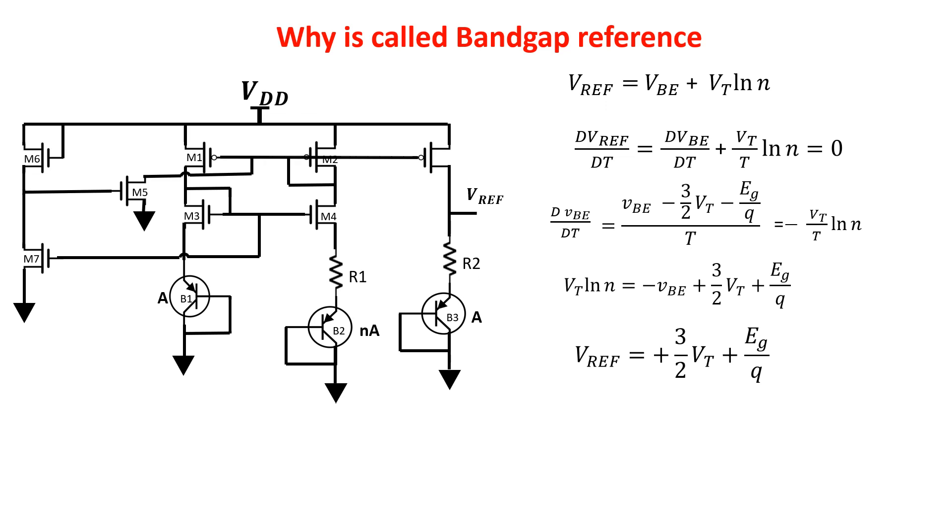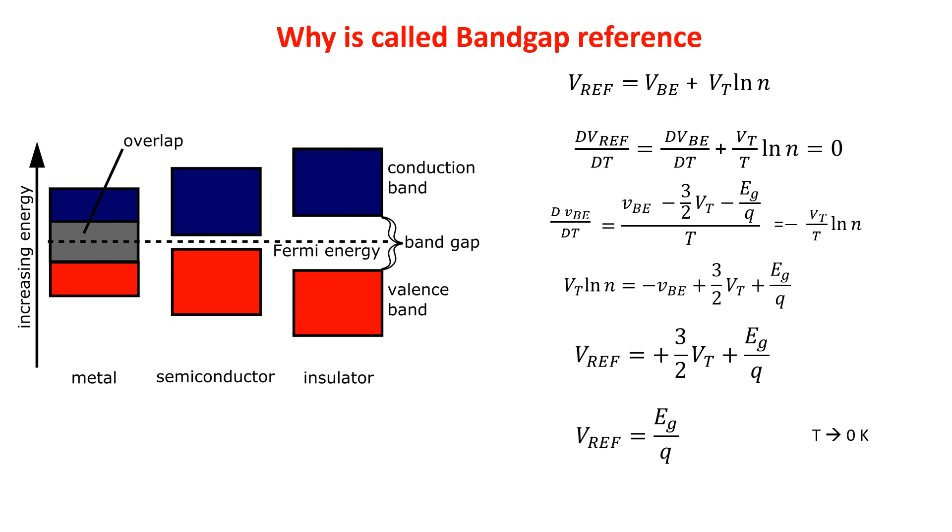So it depends on the thermal voltage and on the bandgap energy of the silicon. In particular, if temperature is zero Kelvin, the reference voltage is equal to the bandgap energy of the silicon. Hence the name. The bandgap energy of the silicon is the energy the electrons need to jump on the conduction band, and in the silicon case is equal to 1.12 volts.